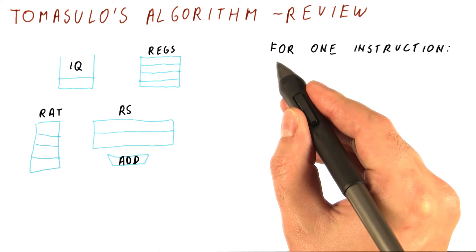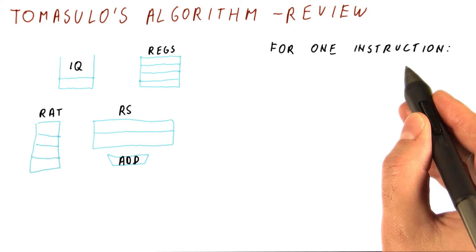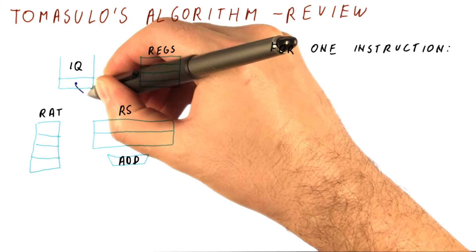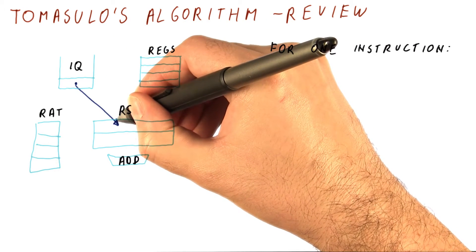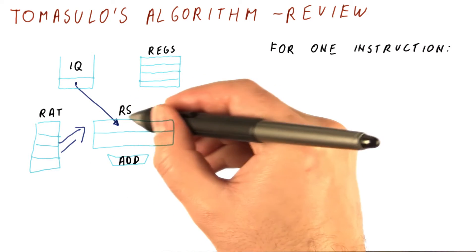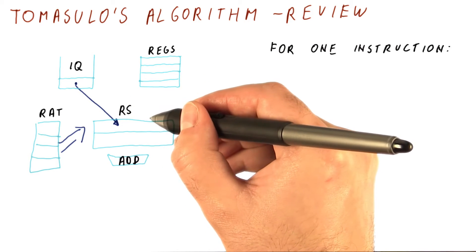If we look at the steps that happen for one instruction, here's what we have. We take the instruction from the instruction queue and issue it to a reservation station, and we look up the RAT to tell us where the operands for the instruction are going to come from.